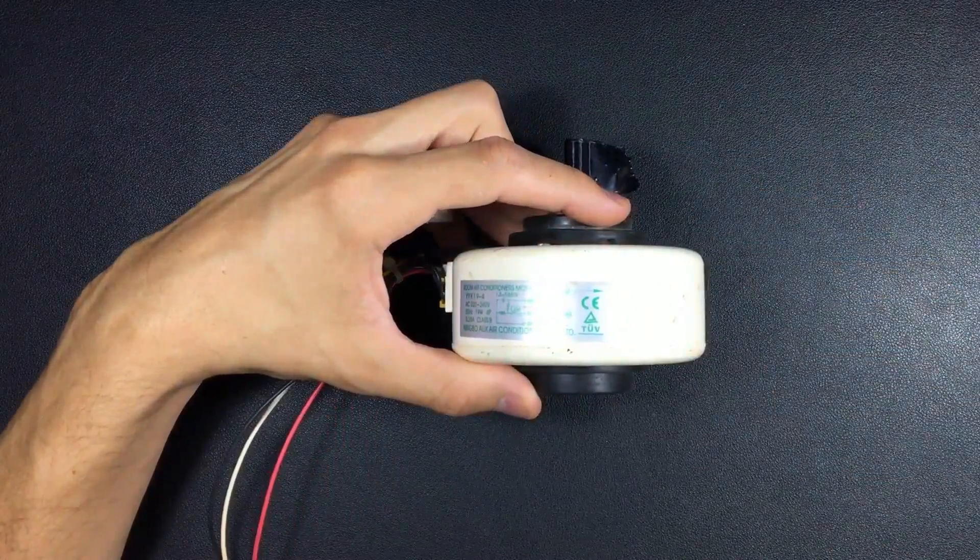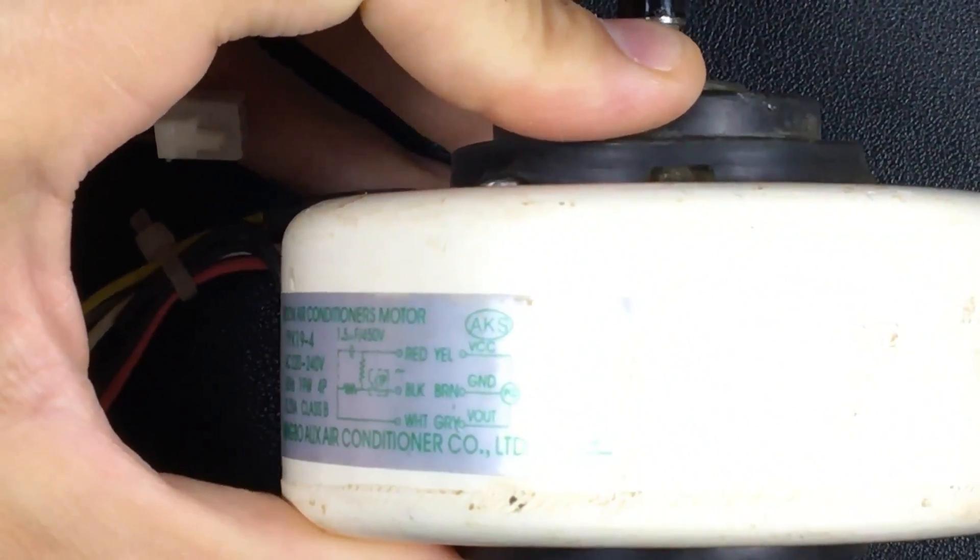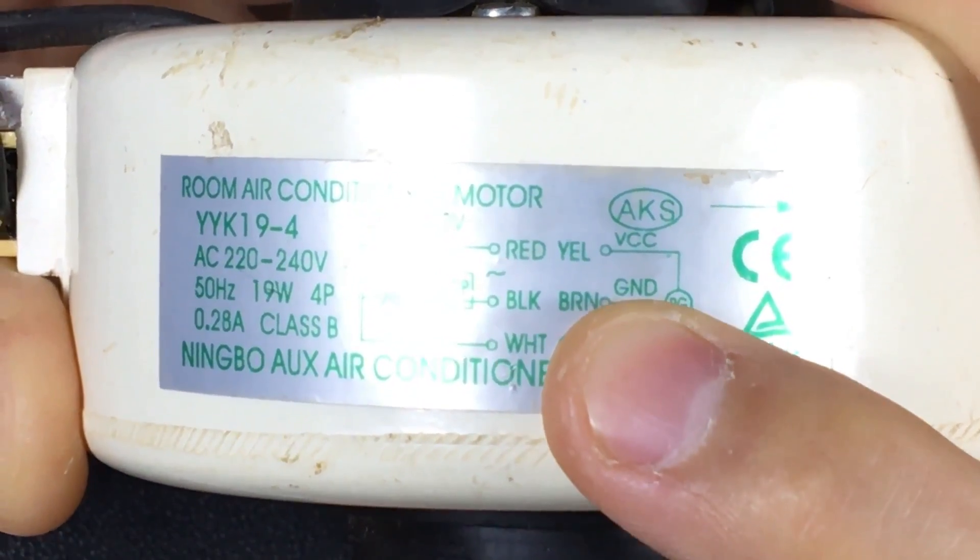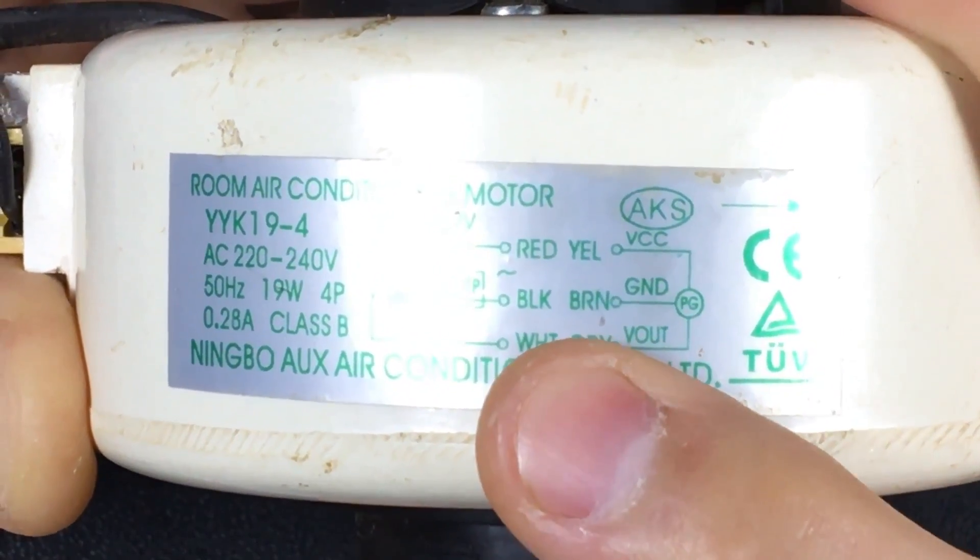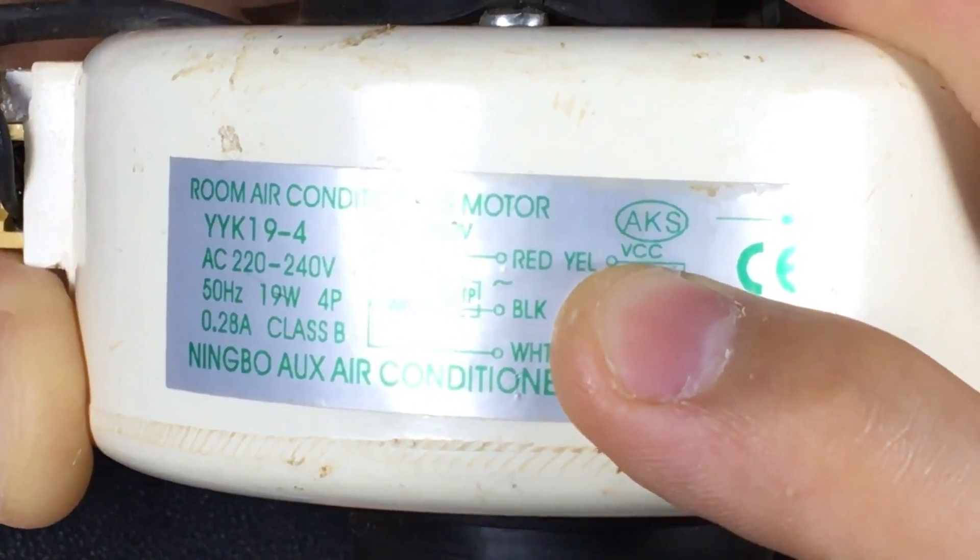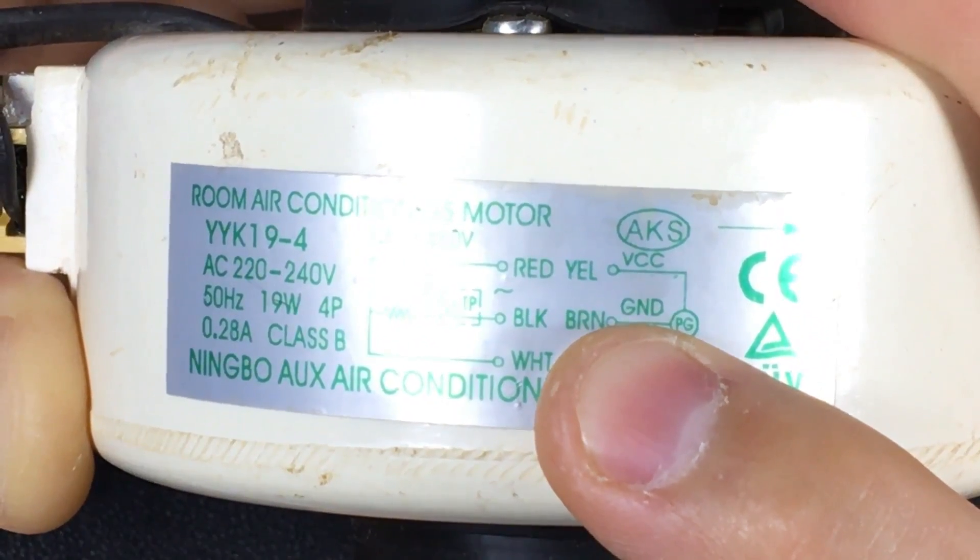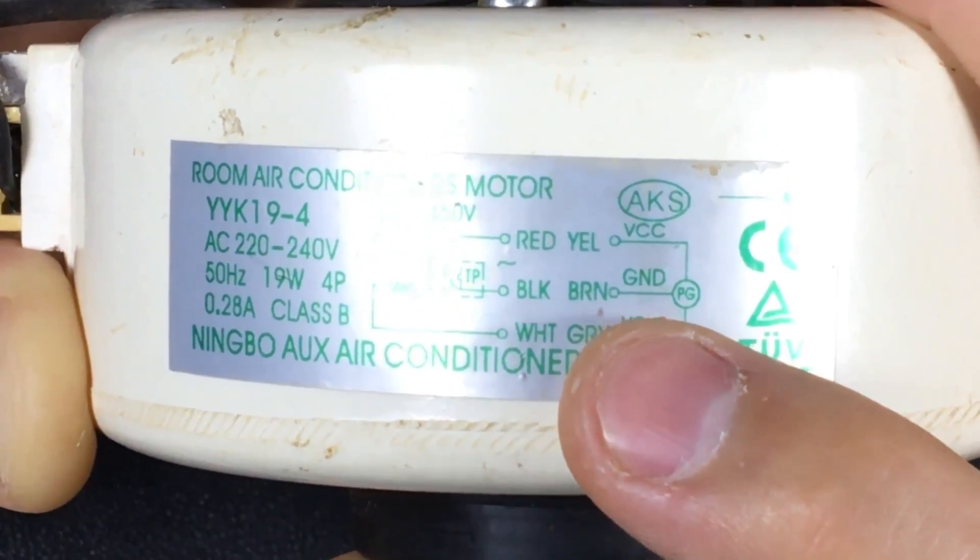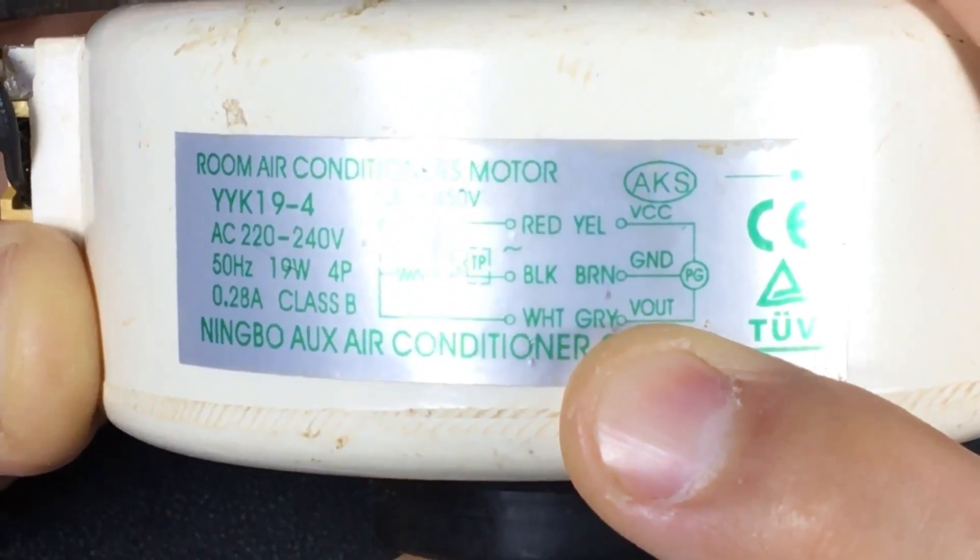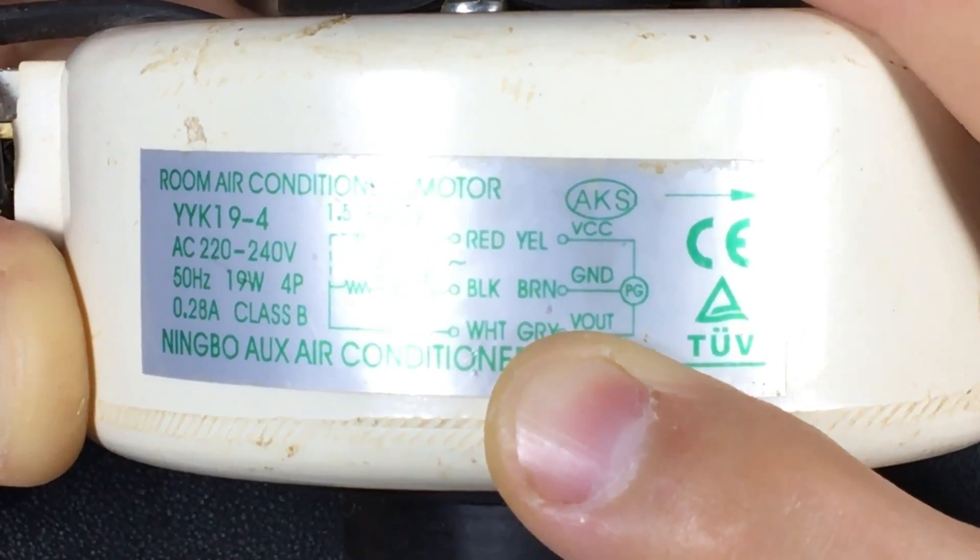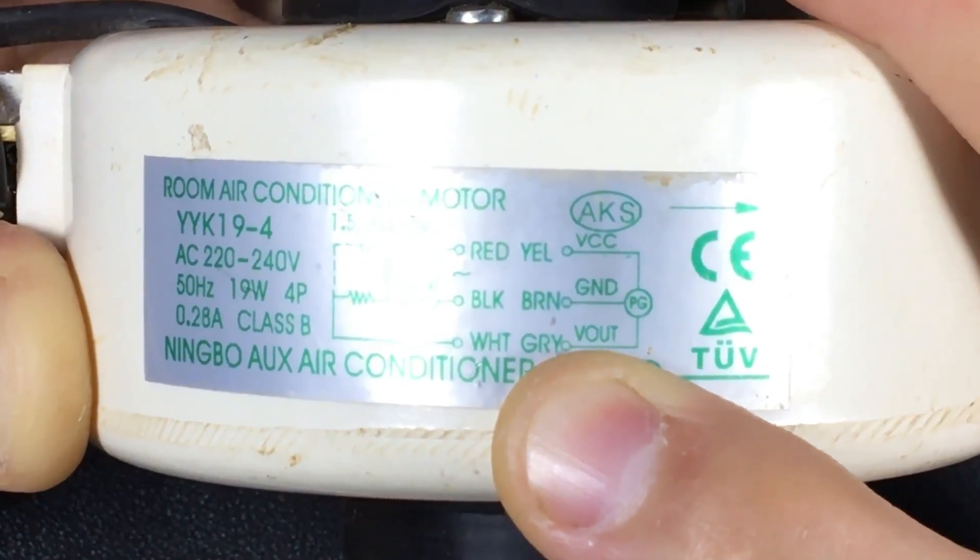So how does this sensor work? In this case, on this fan, we have printed on the side what each of those cables means. On one side, we have the yellow cable, VCC, the brown cable, BRN, which would represent the negative, and gray, output voltage. VCC and BRN are the power supply for this Hall effect sensor. It is powered by 5 volts, and this is the negative. And the one below is the output pulse that will notify the board as the fan rotates. So let's diagram this and understand how this Hall effect sensor works.